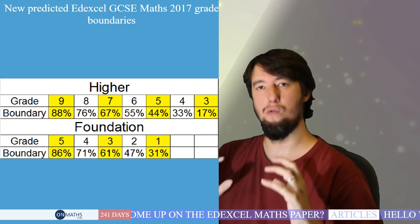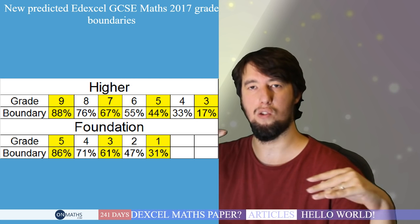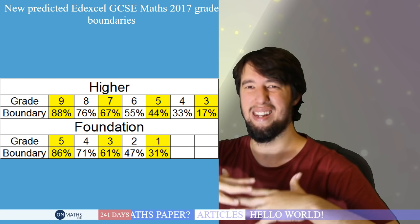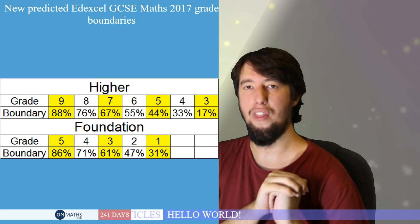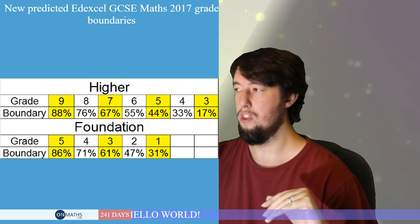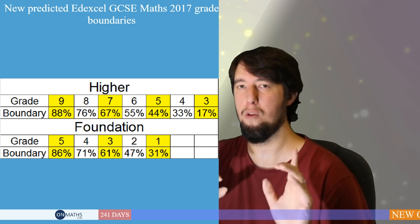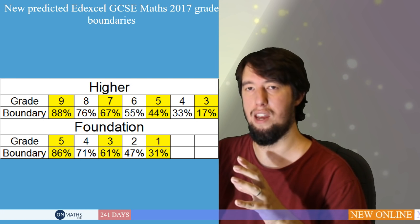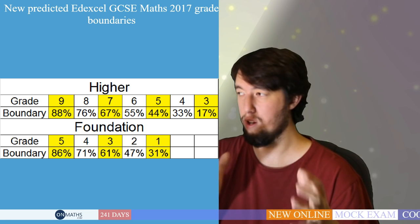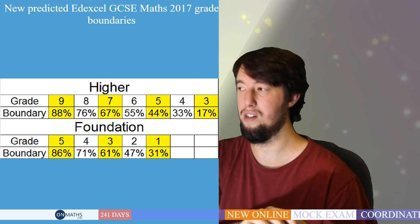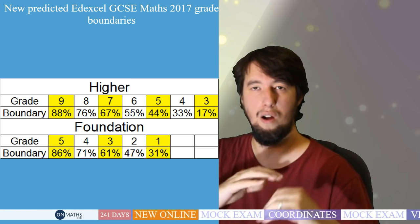Now the biggest thing to realise is this: some schools have converted to a system of everyone doing higher. There used to be a grade E that was a nice little safety net that caught people who weren't necessarily strong enough to get C grades. That safety net is no longer there. On higher, you have to get about 17% for a grade 3. That means there's no safety net anymore. If we put all of our students in for higher and they don't get that 17%, they will be ungraded. I would strongly recommend having a good think about it.